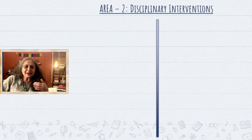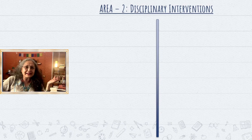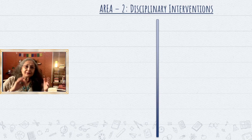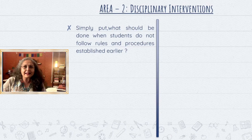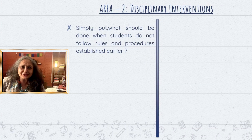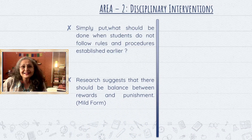Disciplinary interventions simply means what do we do when our students break the rules that we have so consistently framed, taking everybody into confidence. Now there are two things to keep in mind. One is that there cannot be just punishment for some children, as we've seen since our childhood. Research tells us there has to be a balance of punishment and rewards.